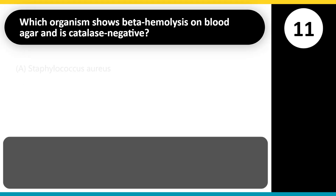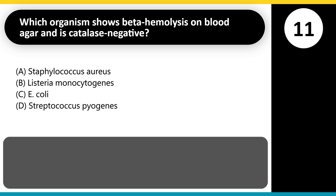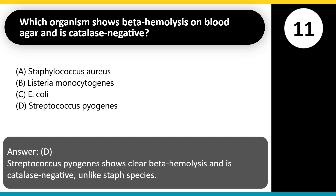Which organism shows beta-hemolysis on blood agar and is catalase-negative? A. Staphylococcus aureus. B. Listeria monocytogenes. C. E. coli. D. Streptococcus pyogenes. Answer: D. Streptococcus pyogenes shows clear beta-hemolysis and is catalase-negative, unlike staph species.